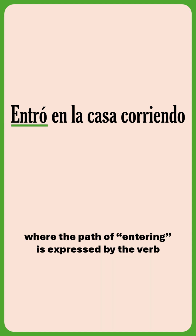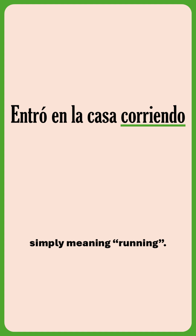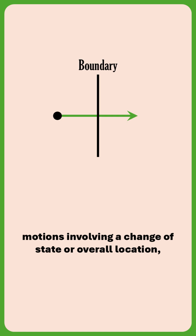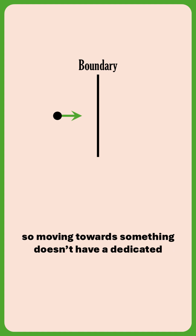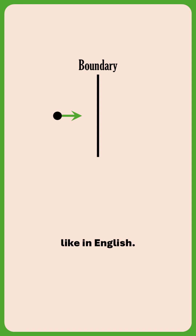In that sentence, the path of entering is expressed by the verb, and the manner of running by an optional element simply meaning "running." It's worth noting that this construction is only used for motions involving a change of state or overall location, so moving towards something doesn't have a dedicated path verb — you'd just use a manner verb and a preposition, like in English.